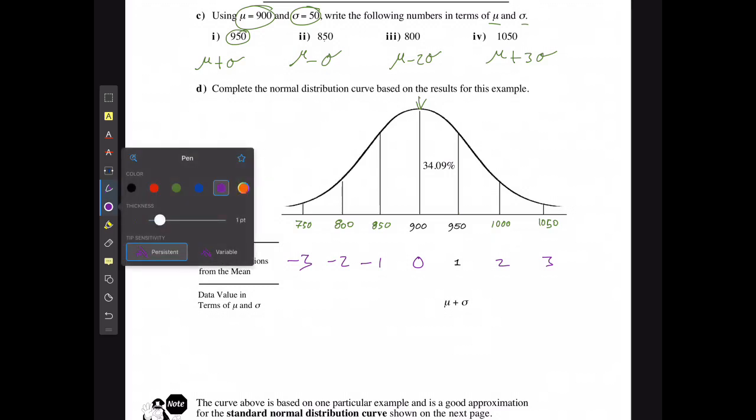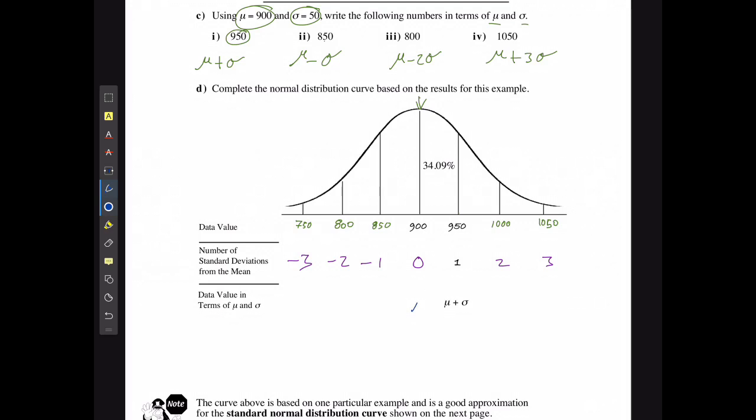What is the actual value in terms of mu and sigma? Well, the 900 is just mu. 950 was mu plus sigma, which means this would be mu plus 2 sigmas. This one we solved in the last example, mu plus 3 sigmas. Which means this would be mu minus sigma, mu minus 2 sigmas, and mu minus 3 sigmas.